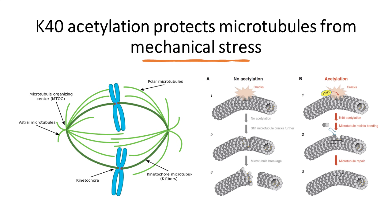Another example is the acetylation of microtubules. Microtubules are present in every cell and have numerous functions. The main function is present during mitosis and meiosis where chromosomes attach themselves to spindle fibers. If a crack or damage occurs at one part of the microtubule, acetylation will occur on the lysine residue at position 40. Lysine 40 acetylation prevents the microtubule from bending and allows the repair process to take place. If there is no acetylation, the crack will grow bigger and result in breakage of the microtubule.